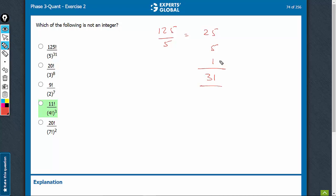If you're not aware of this concept, please watch the relevant video. A very important concept, this one. So, 125 has 5 raised to power 31 in it. So, this is going to be an integer. So, this should be eliminated.